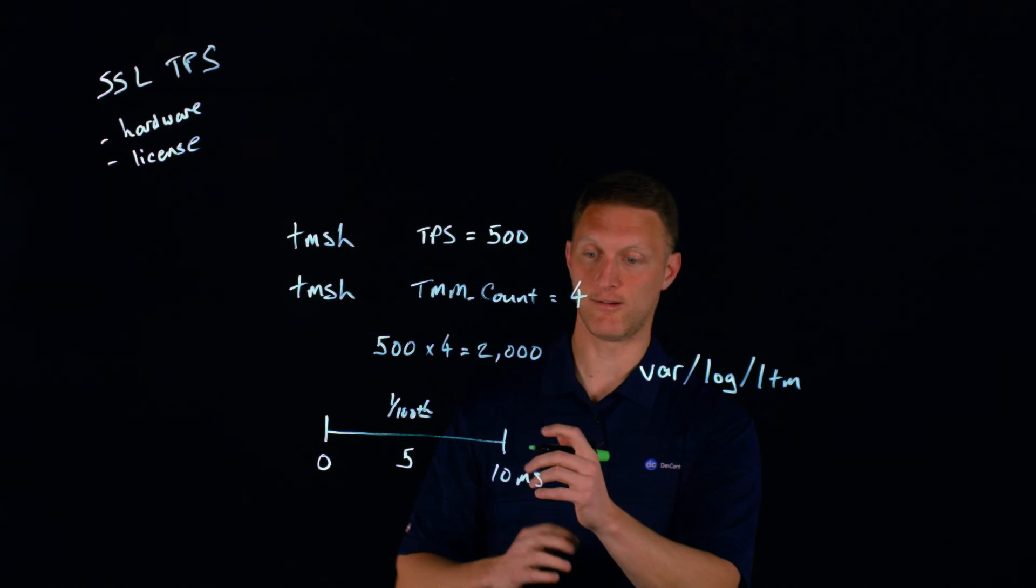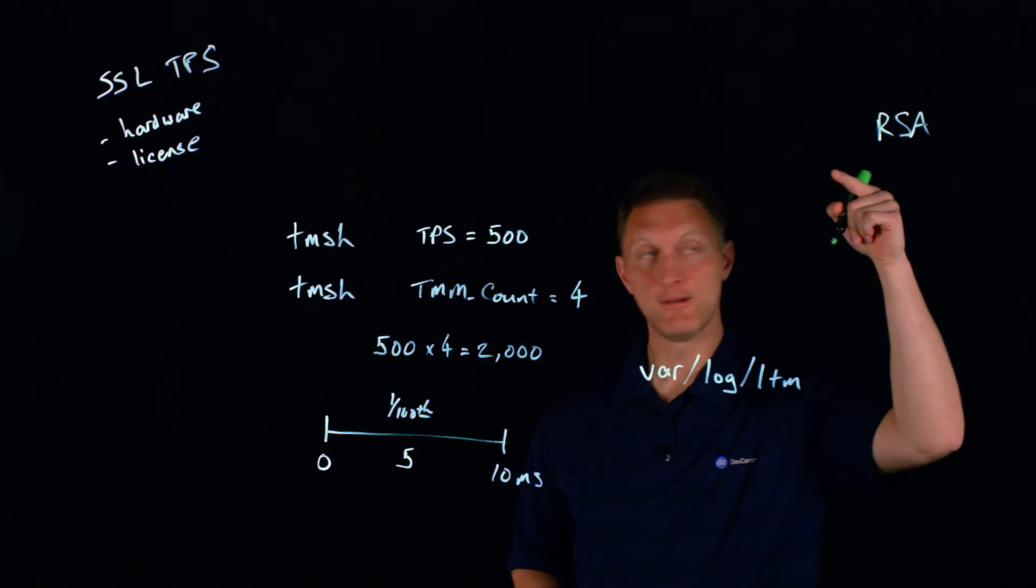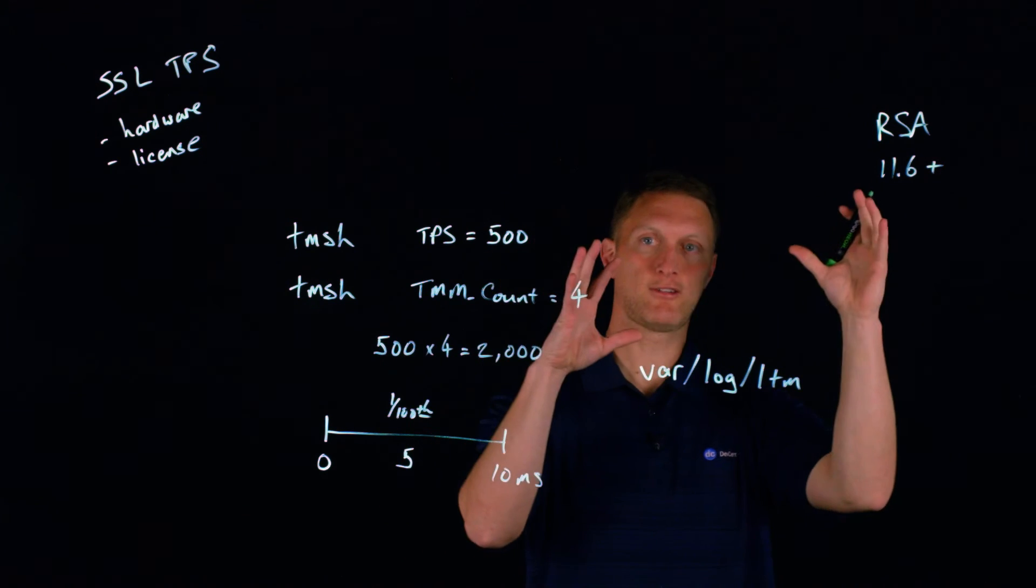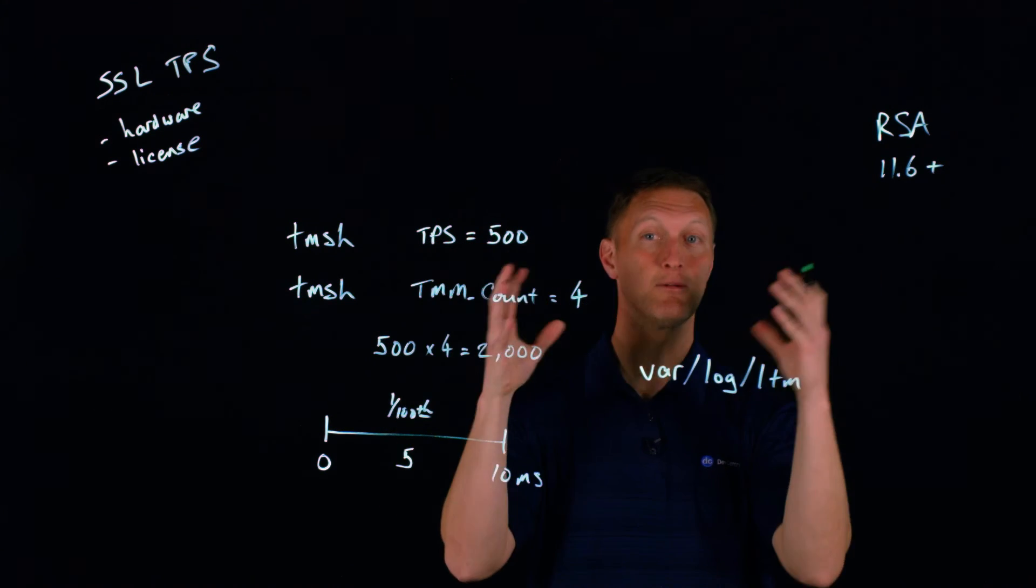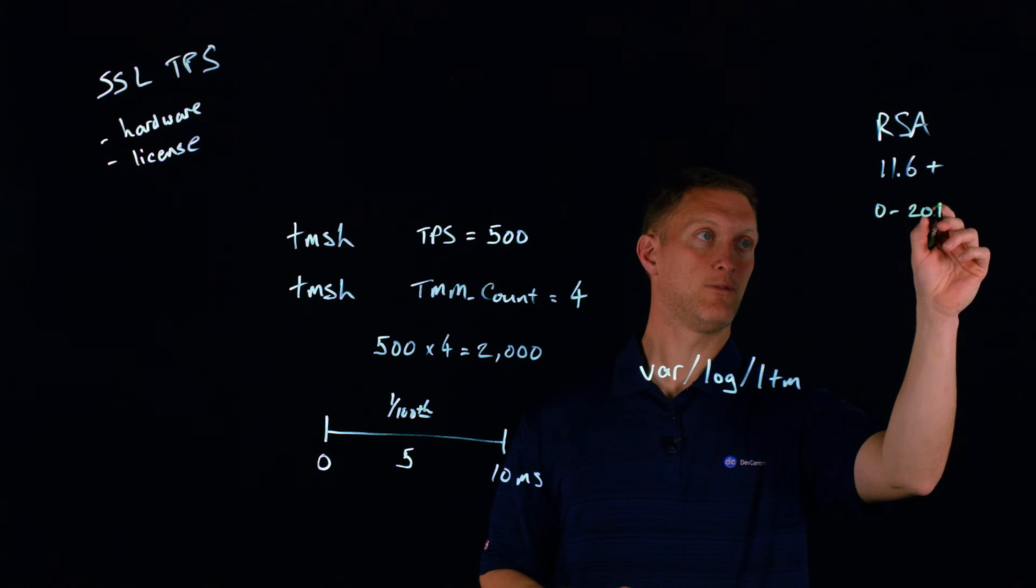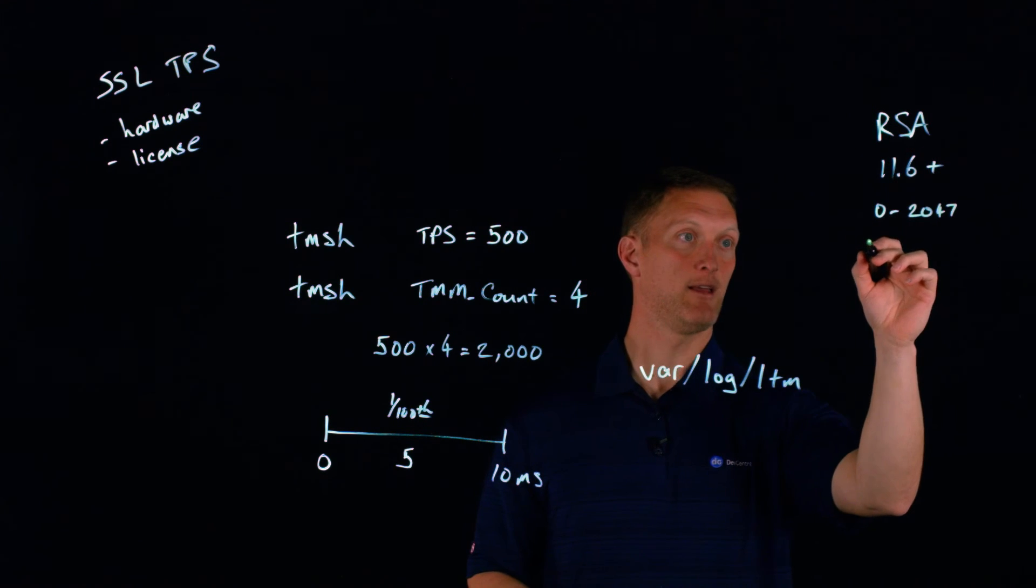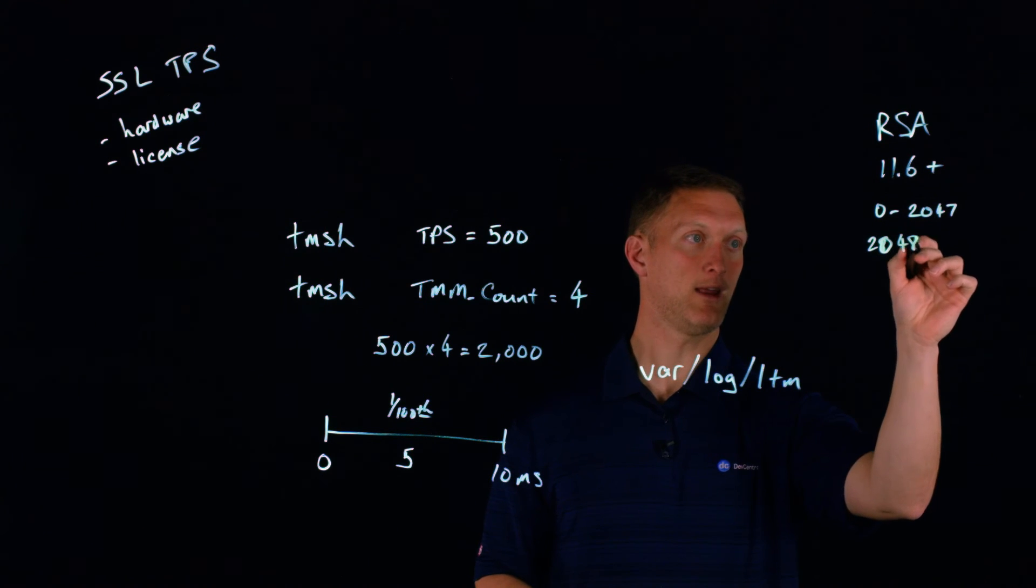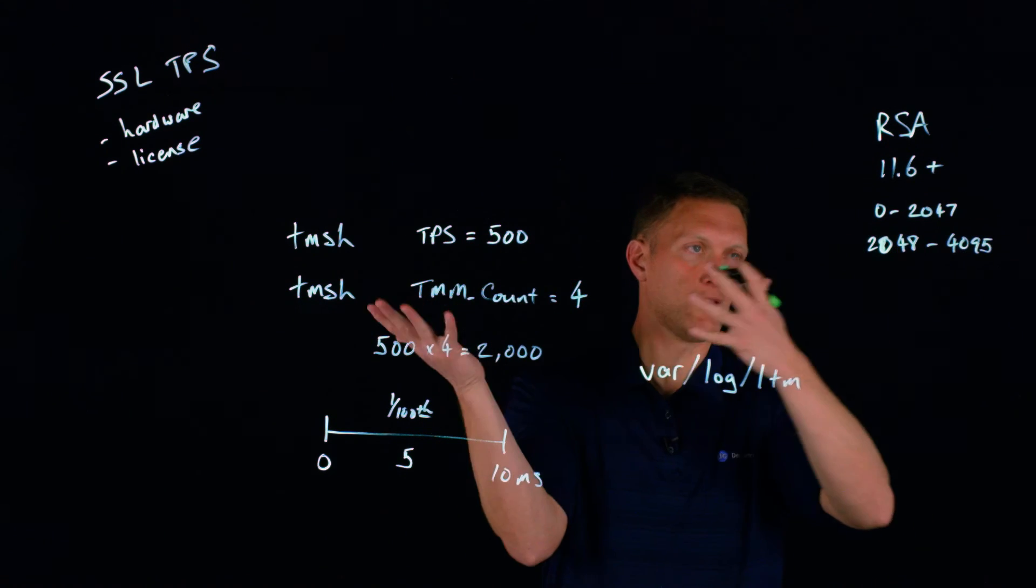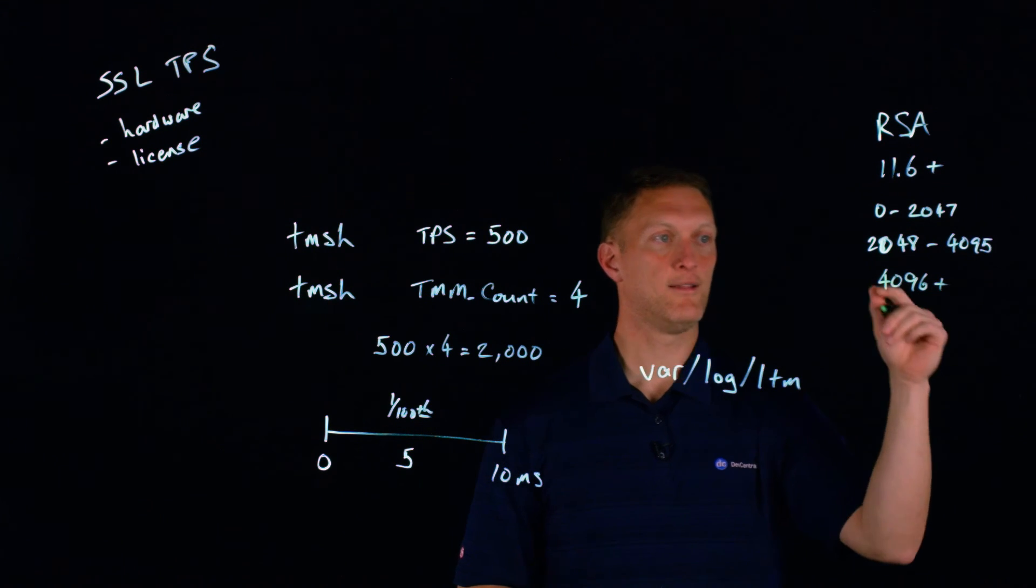The last thing I'll mention is for RSA ciphers specifically. This starts in 11.6 and beyond. For RSA ciphers specifically, the Big IP treats the limits or the license number for transactions per second a little bit differently based on the key size for RSA ciphers. So if you have a key size between zero and 2047, then you get an unlimited number of transactions per second. If you go 2048 all the way out to 4095, then you get whatever the license number is. So you know, again, whatever the license number is, if you have a key size say 2048 key size, then you get that license.